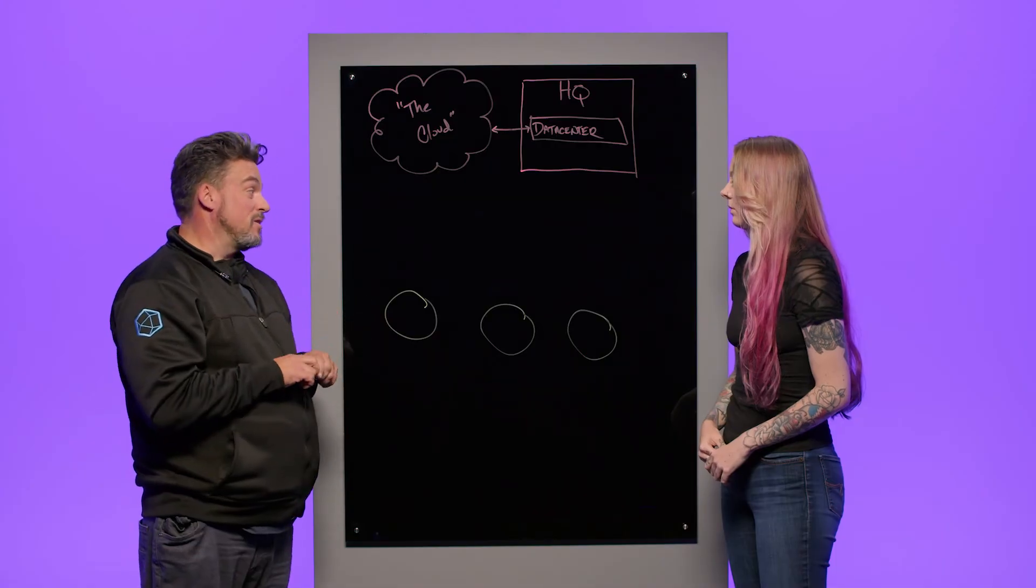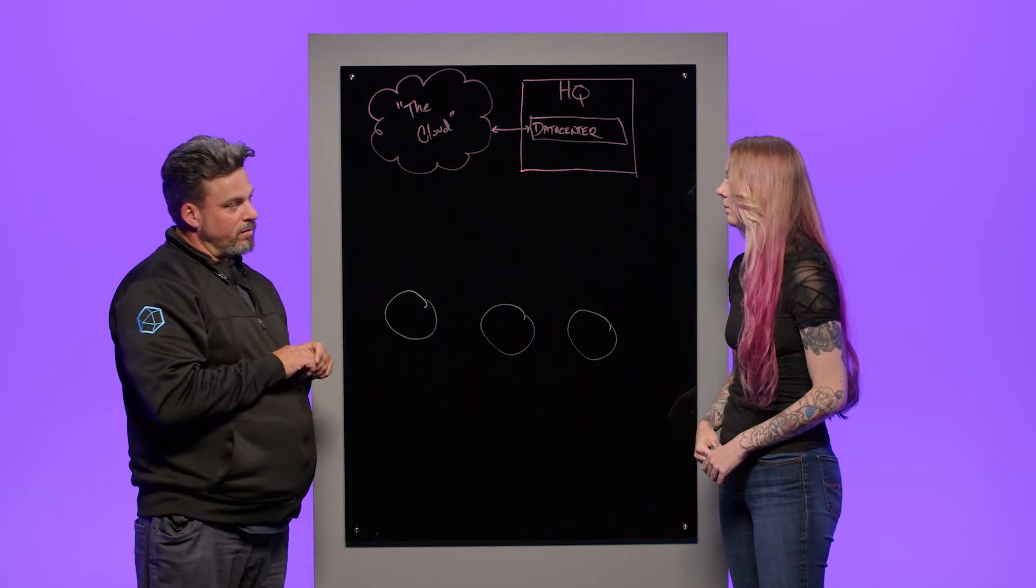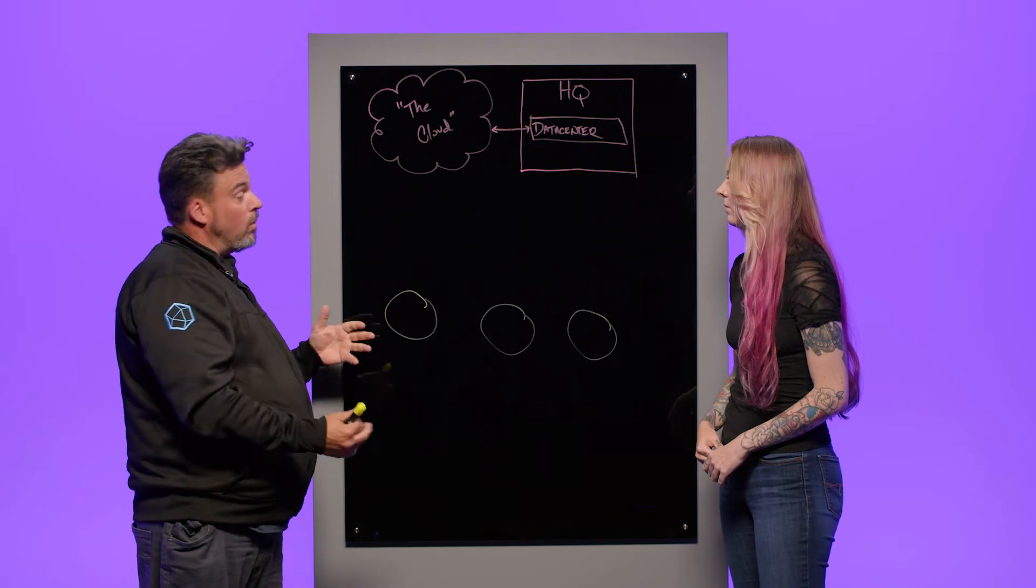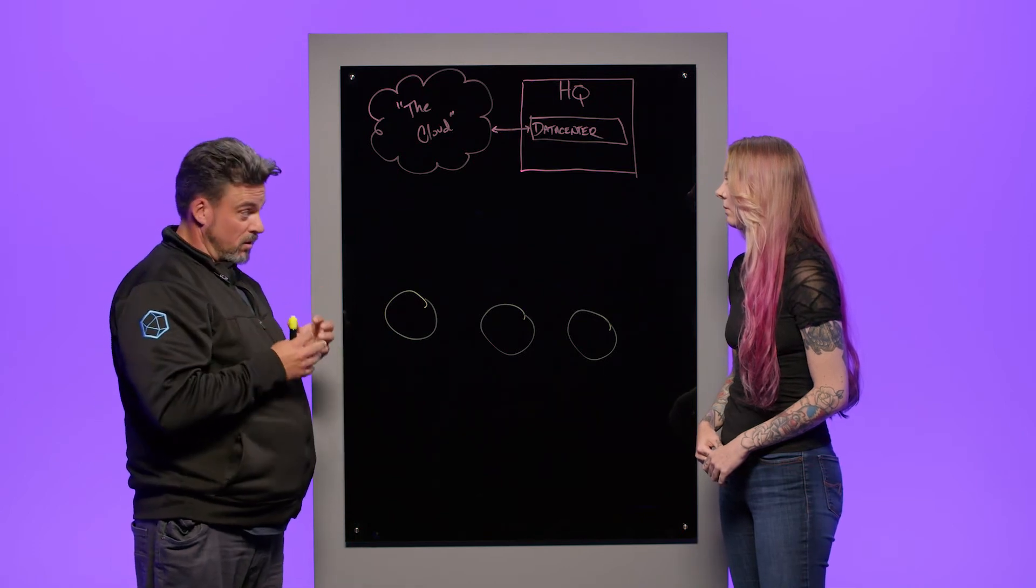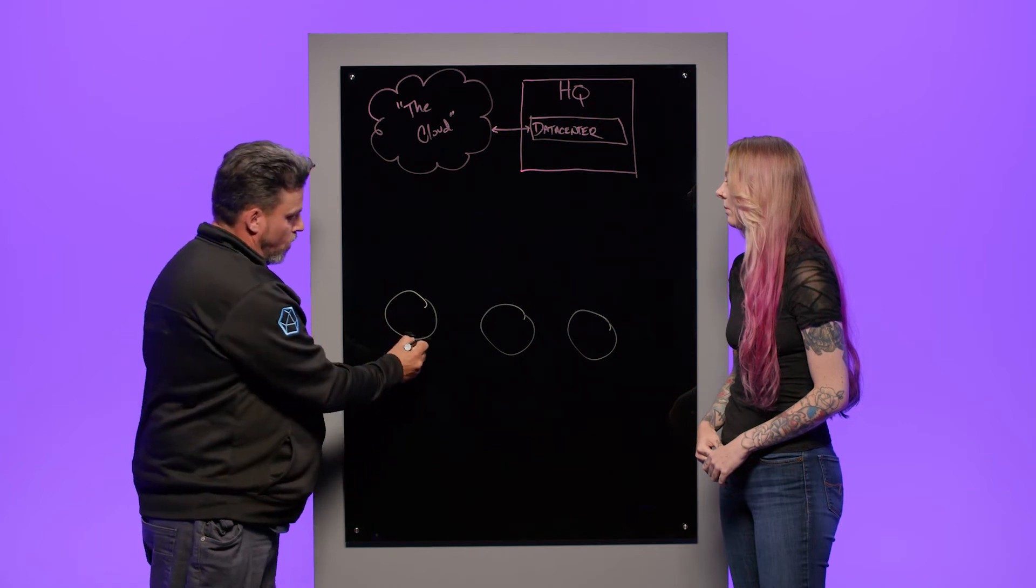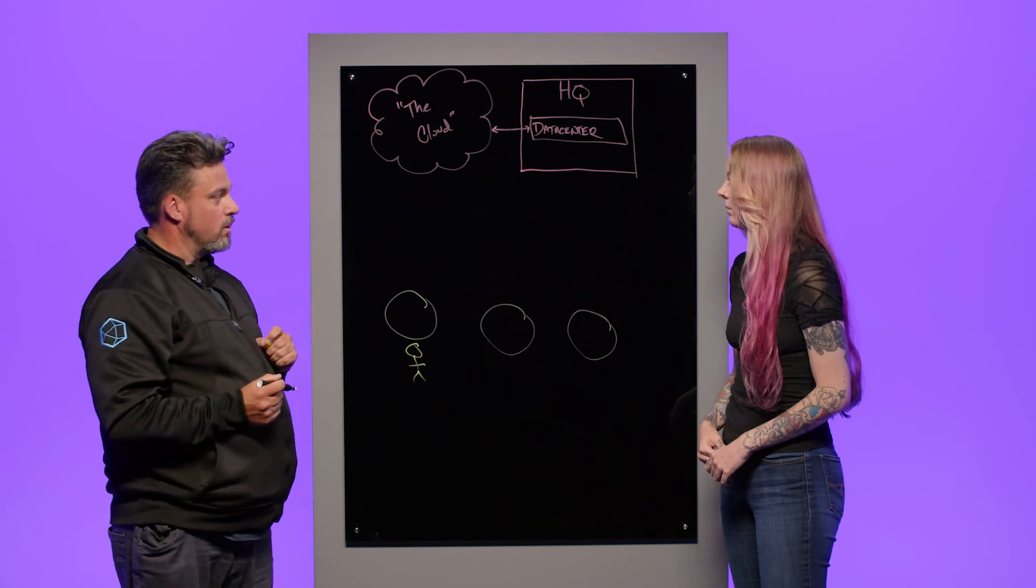And then finally, we're starting to see something really exciting from a select number of customers, which is actually taking the smallest version of our InfluxDB and installing it there on the device itself. That way, all of the local data is persisted locally, so that somebody who's responsible for managing that one particular turbine can actually see the information from that one particular turbine.